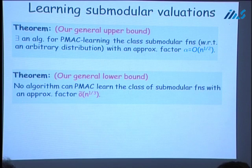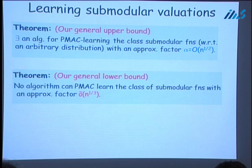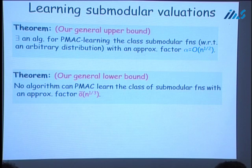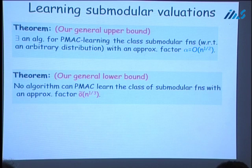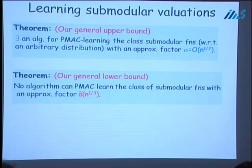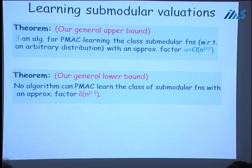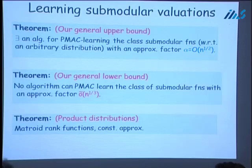There is a submodular function that can't be approximated with a function having a small representation, and this lower bound is really interesting and surprising. We'll discuss more when we get to the lower bound. In special cases, we also show better approximation factors. For example, if the function we are trying to learn is a matroid rank function and the underlying distribution is a product distribution over the elements of the ground set, then we can get a constant factor approximation.